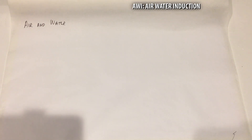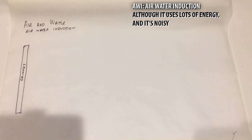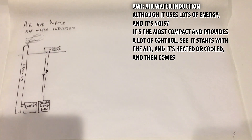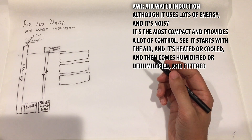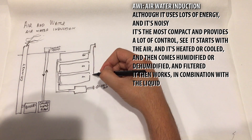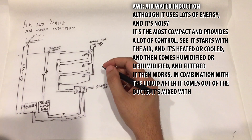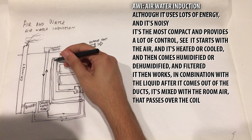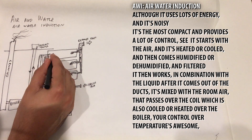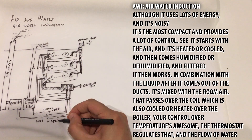The final type combines air and water — it's the hybrid system AWI, Air-Water Induction. It requires the least space of all systems. Although it uses lots of energy and is noisy, it is the most compact and provides a lot of control. Air is heated or cooled, then humidified or dehumidified. After coming out of the ducts, it's mixed with room air that passes over a coil, which is also cooled or heated. The thermostat regulates the flow of water for awesome temperature control.